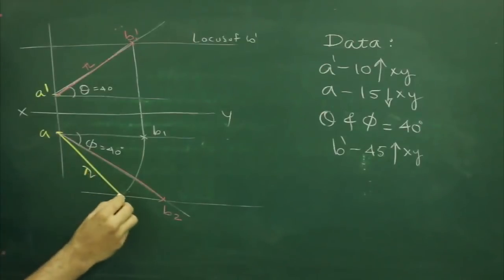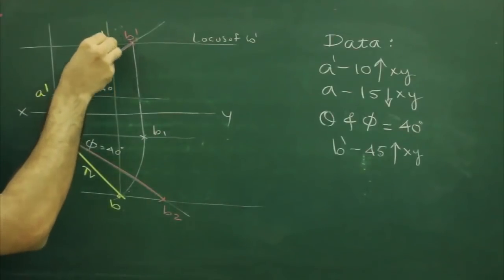Top view. Then project this point straight up. Wherever it will cut, that is B dash.